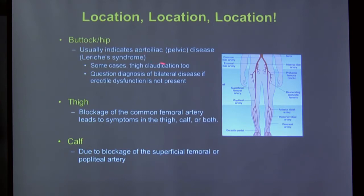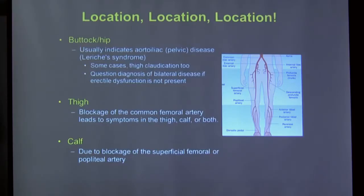Disease location predicts symptom location one level below. Aortoiliac or pelvic disease causes buttock or hip claudication. In men, this can also cause impotence — known as Leriche syndrome — from pelvic vessel blockages. Common femoral artery blockage in the groin affects most of the leg. Isolated calf symptoms typically indicate superficial femoral artery disease, the main artery running down through the thigh.